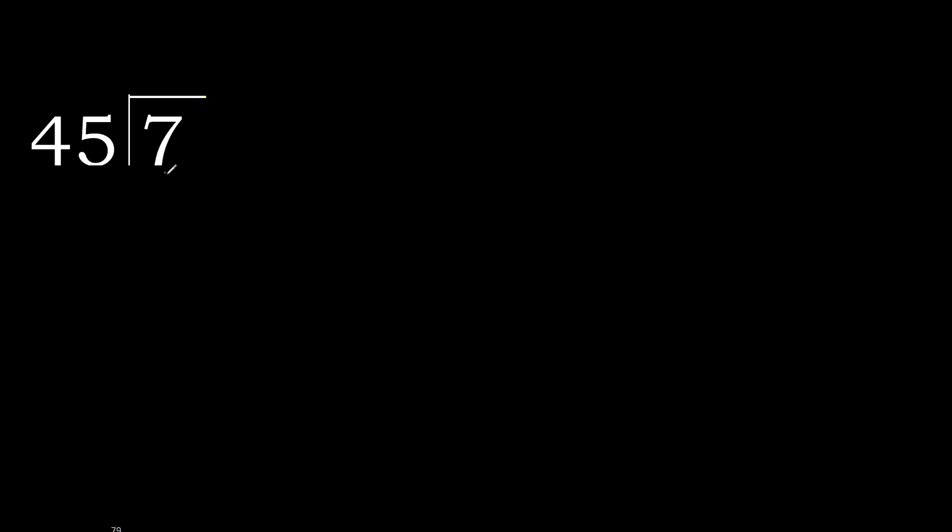7 divided by 45. 7 is less, therefore complete — always complete with 0. Here, 0 point.